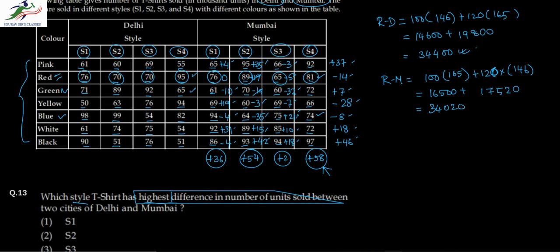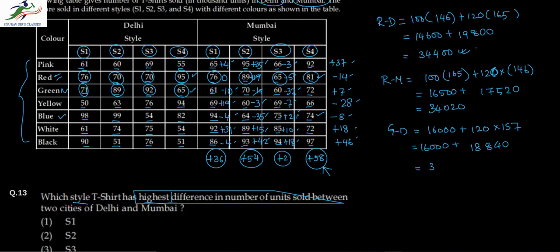For Green Delhi: 100 multiplied by the sum of S1 and S2, which is 71 plus 89 equals 160, plus 120 multiplied by the sum of S3 and S4, which is 92 plus 65 equals 157. That gives 16,000 plus 18,840, totaling 34,840 for Green Delhi.